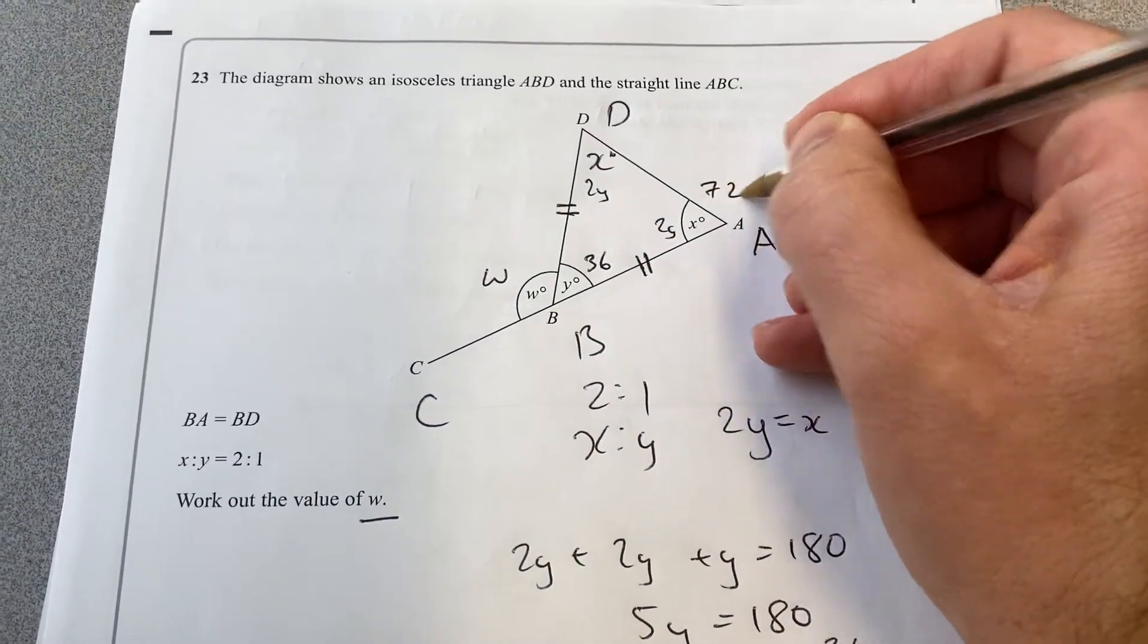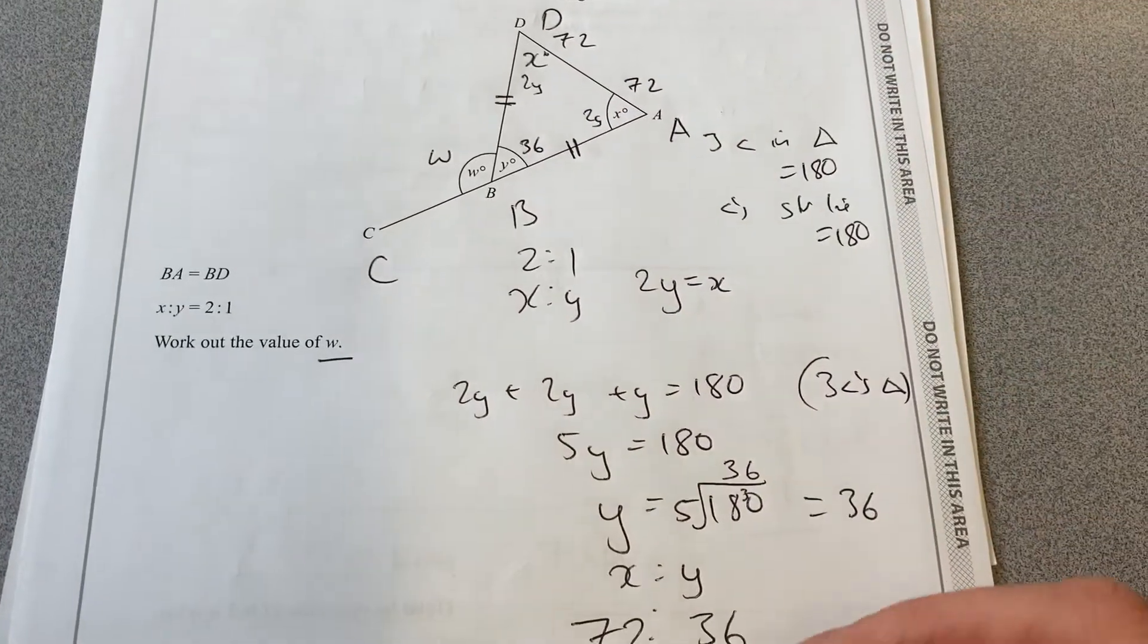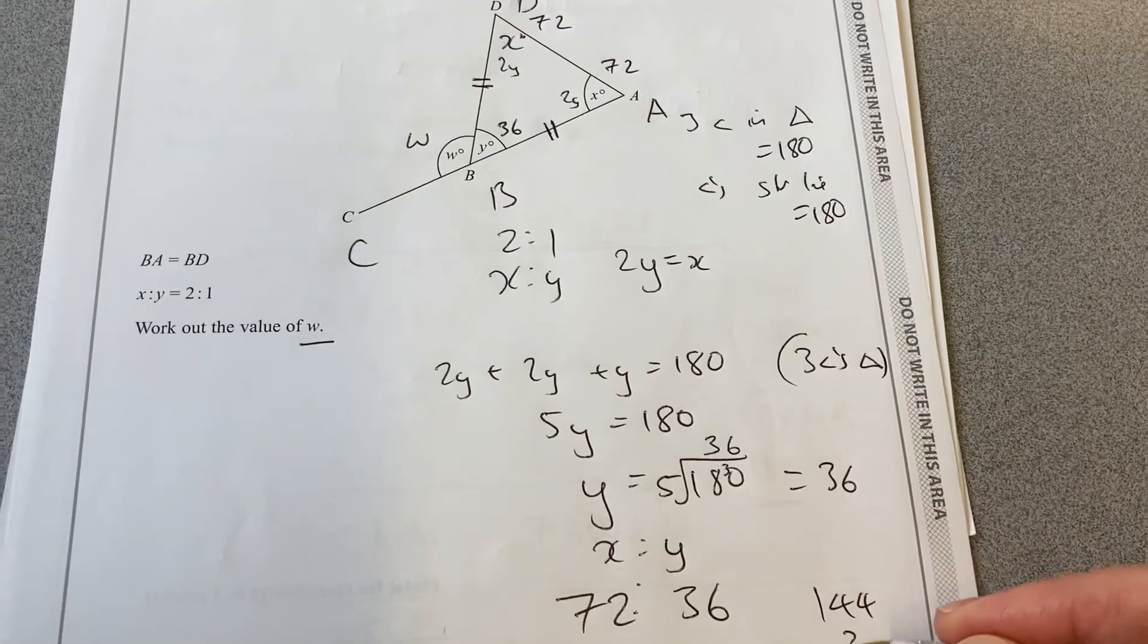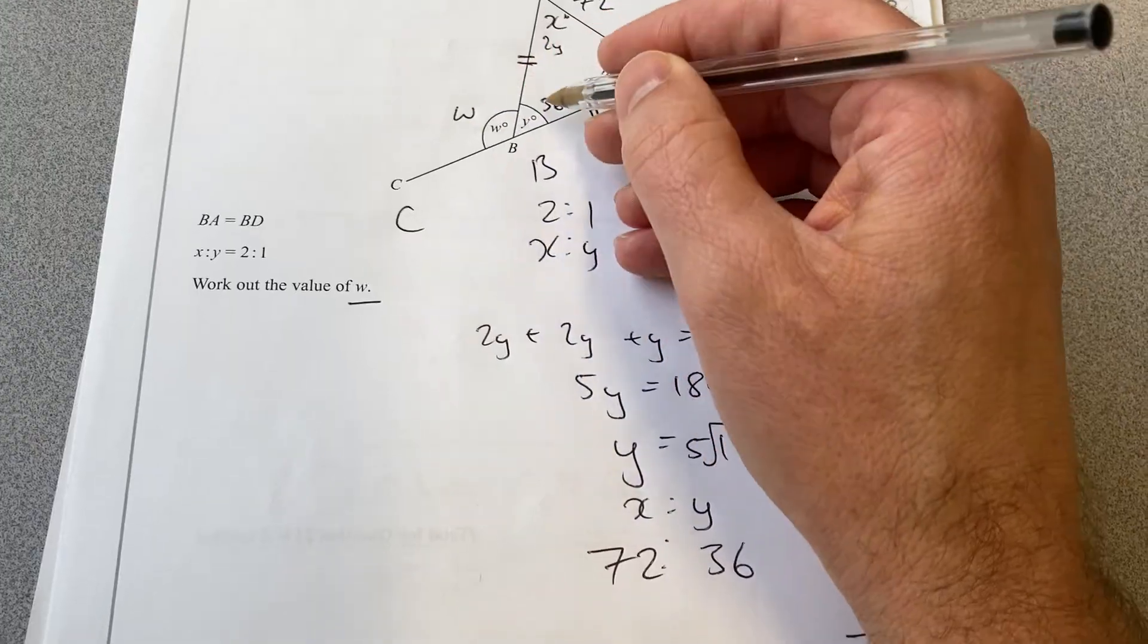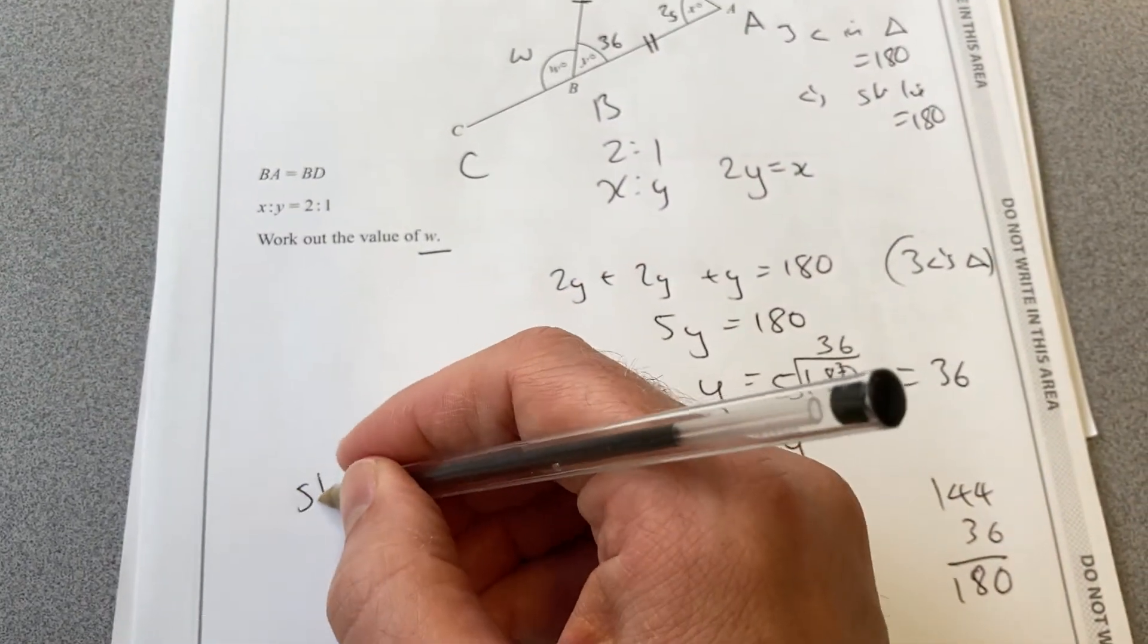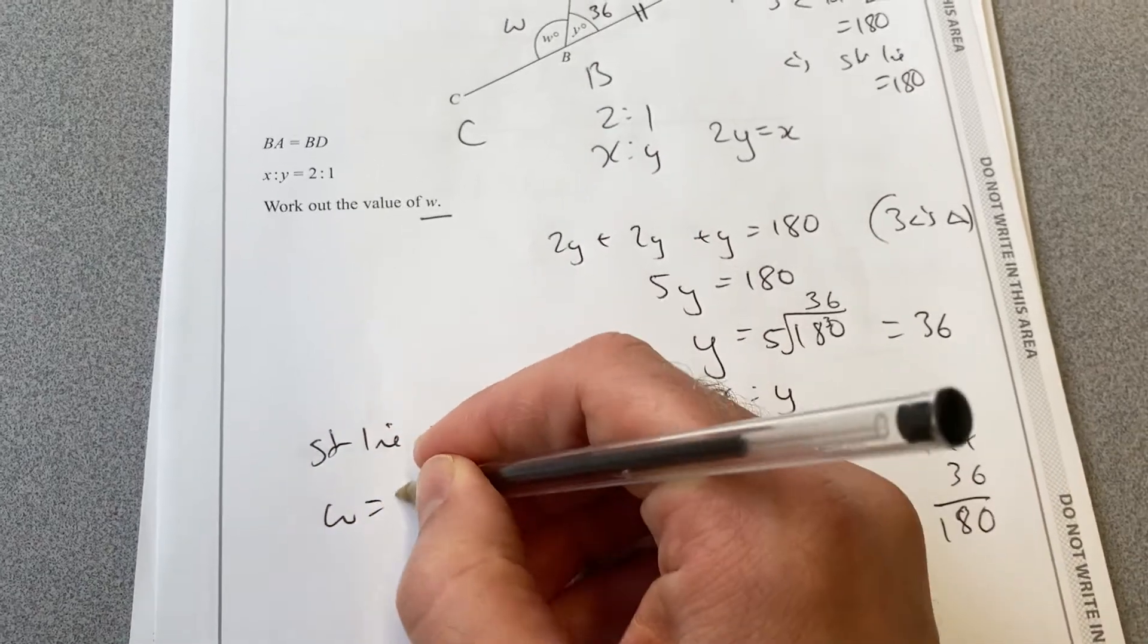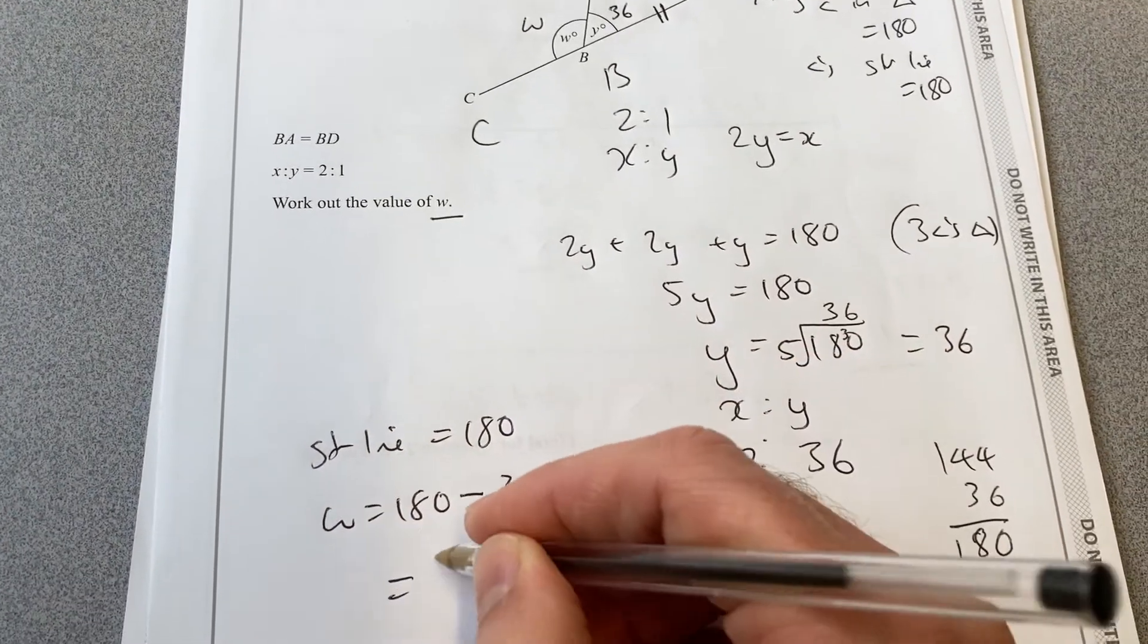So each of those will be 72, and that's 36, because 2X plus that 1Y, 144 plus 36 does add up to 180. Just checking that. So now I'm over here, angles in a straight line add up to 180. So W will equal 180 minus 36, which is 144.